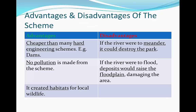It also creates habitats for local wildlife — by building the lake there is a lot more fish and biodiversity which can live inside it. However, the disadvantages are that if the river were to meander it could destroy the park, hence probably ruining some other land nearby. Also, if the river were to flood, deposits would raise the floodplain which would then damage the area as well.